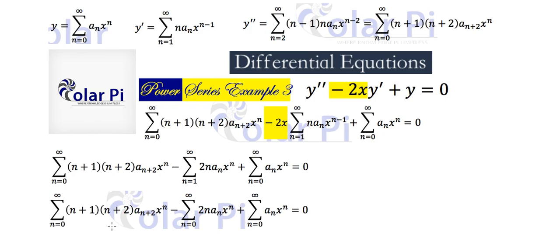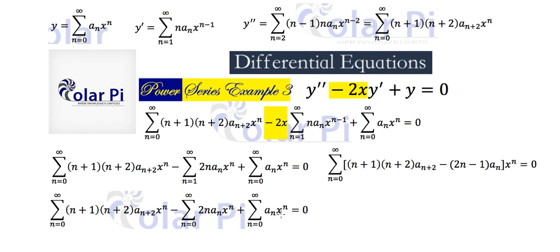Now all the sigmas are identical — they all have x to the n — so we can just write one sigma combining them all. Clearly, to make this equal to 0, we need to set the coefficient of x to the n — everything multiplying x to the n — equal to 0.